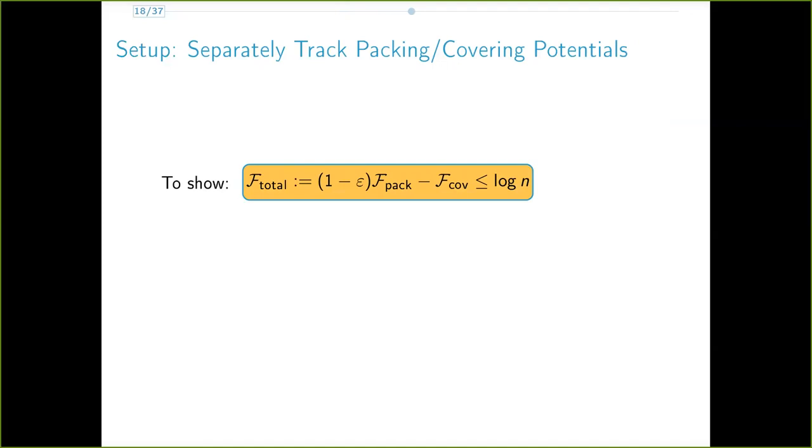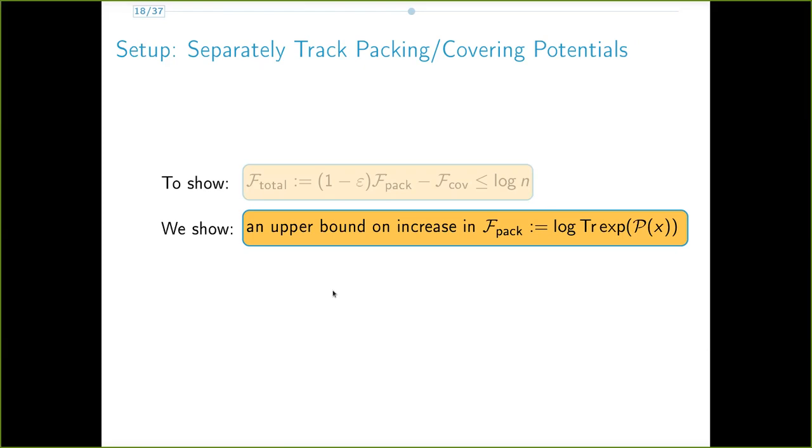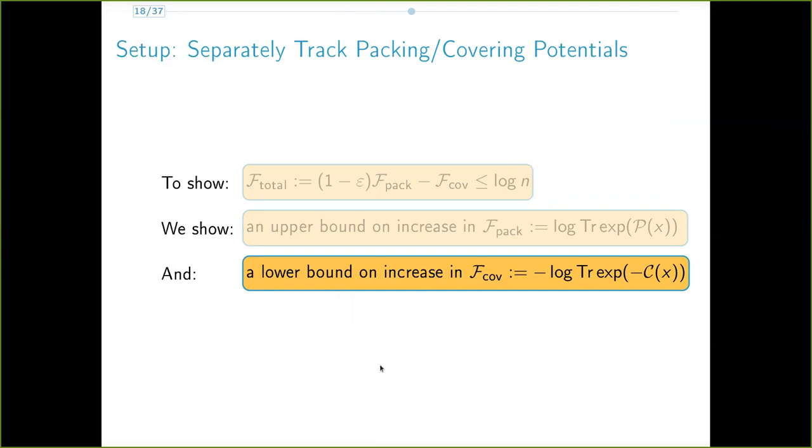The way we maintain this total potential invariance is by separately tracking the packing and covering potentials. We first show that the packing potential increases by at most a certain amount, and then we show that the covering potential increases by at least a certain amount, which ensures that the difference between them is bounded.